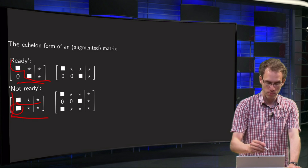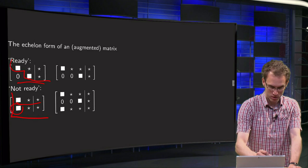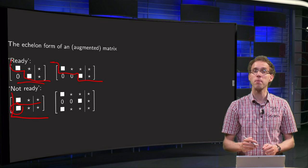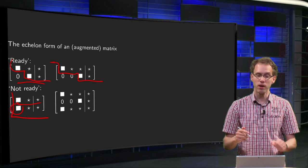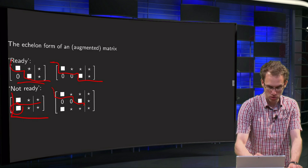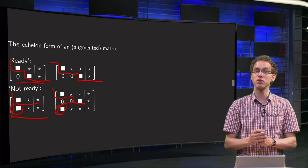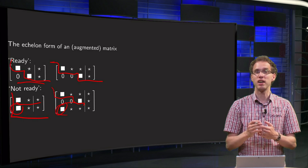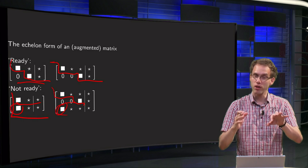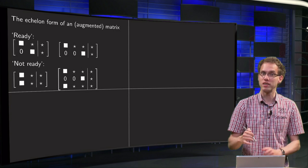Let's look at the next example. We have our squares again, and here we can form a staircase. So we are ready, we cannot reduce further. The steps are a bit broader, but that's okay. And in this example over here, I can try to make a staircase, but then it goes wrong — I have to go back. You can see I am not ready, because we could eliminate this element over here. So that's the idea: if you can form this stair-like structure in your augmented matrix, then you are done with your row reduction. If you cannot, you could go on further.